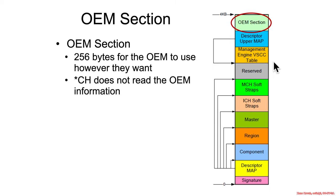Jumping up to the top of the flash descriptor at four kilobytes, there is what's called the OEM section — basically just 256 bytes for an OEM to use however they want. The PCH and the ICH don't read or do anything with this.